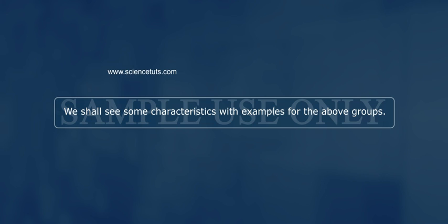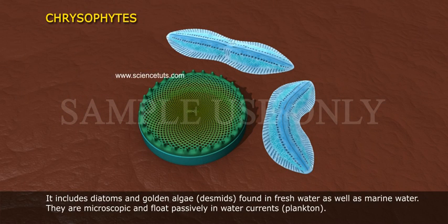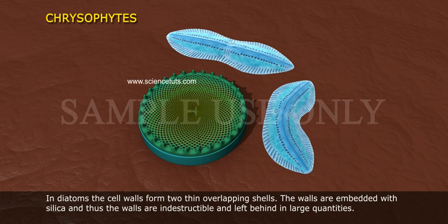We shall see some characteristics with examples for the above groups. One: chrysophytes. It includes diatoms and golden algae. These are found in freshwater as well as marine water. They are microscopic and float passively in water currents, known as plankton.